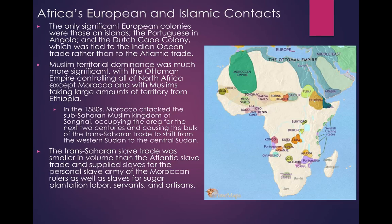Africa's European and Islamic context. In the centuries between 1550 and 1800, Europeans built a growing trade with Africa, but they did not acquire very much African territory. The only significant European colonies were those on islands, the Portuguese in Angola, and the Dutch in Cape Colony, which was tied to Indian Ocean trade rather than the Atlantic trade.